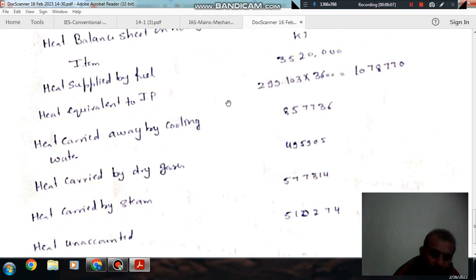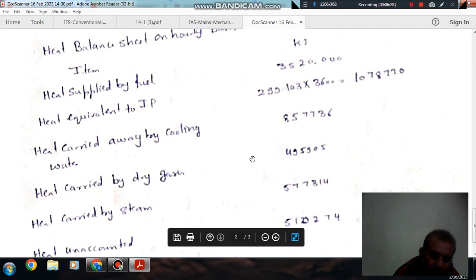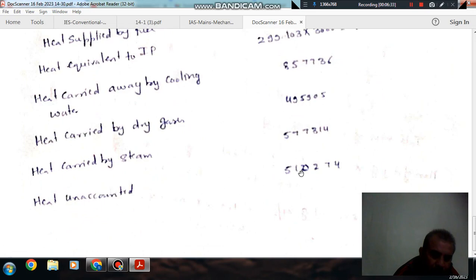Now the heat balance sheet can be prepared. Heat supplied by fuel is this value. As we have indicated power, we will find out the energy on hourly basis. Heat carried by cooling water is this, heat carried by dry gases is this, heat carried by steam is this. Unaccounted heat can be found by adding all components and subtracting from heat supplied.